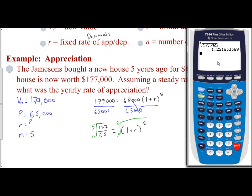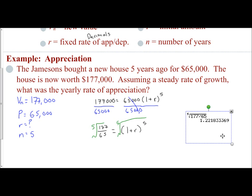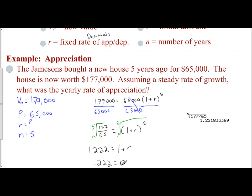And I get 1.2218 — let's round it to 1.222. So 1.222 equals 1 plus R, since the root and the exponent cancel. Subtract 1 from both sides, you get 0.222 equals R. Your rate is a decimal, so we want to convert it to a percent. My rate is 22.2%, which is a very good appreciation percent.